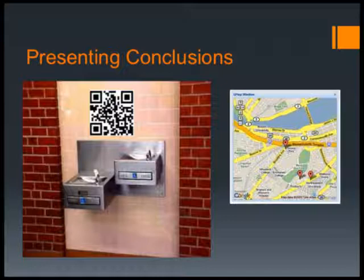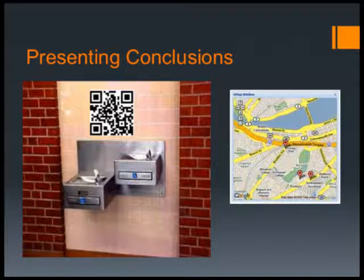For extension activities — something that may go a little beyond classroom time but is great for more advanced students — they can make QR codes and place their data on a Google map of their school, marking the exact location where they collected data, placing a placemark, and making a link to the data they collected. They can then make a QR code of that URL and place it above the location of the water source at the school, so that anyone with a smartphone can scan that code and find out information about the water they're about to drink.